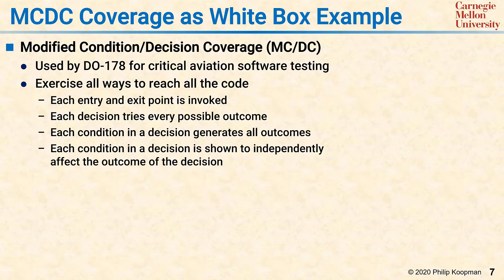That's quite a lot to take in, but the idea is: in branch coverage, you would do the IF and the ELSE. But in MCDC coverage, if there are five different ways the IF could be true, you need to try all five different ways and then also show the ELSE could happen.